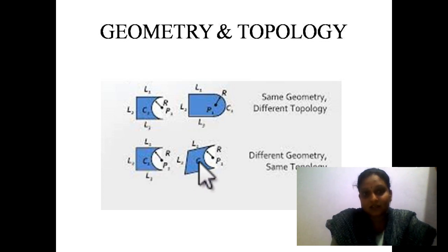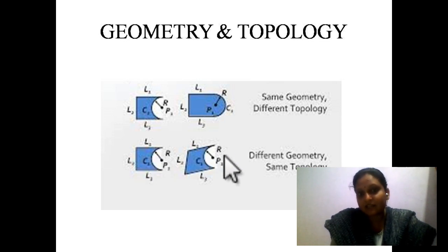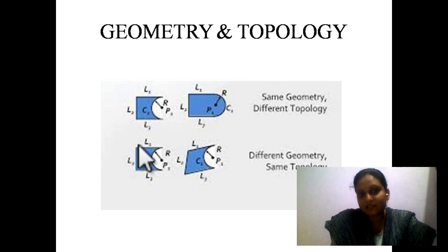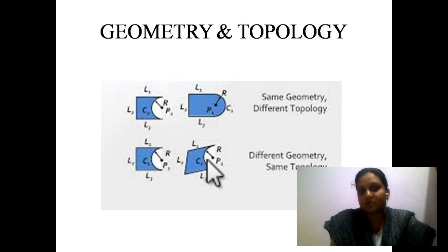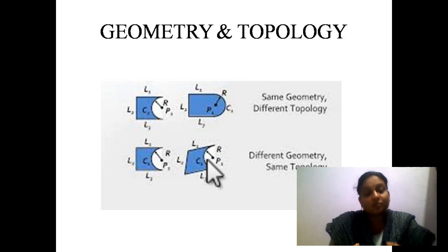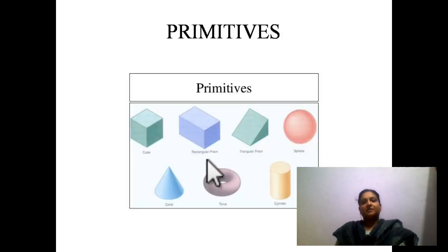For the second pair of figures, we say different geometry and same topology. Here L1, L2, L3 and radius are labeled in both figures, but there is some angle difference — meaning there is a difference in the geometry. However, the connectivity between the edges is the same: L1 is connected to L2, L2 is connected to L3, and L1 and L3 are connected to the radius. So the key point is — geometry speaks about dimensions like length, width, height, radius, and topology speaks about connectivity between edges.